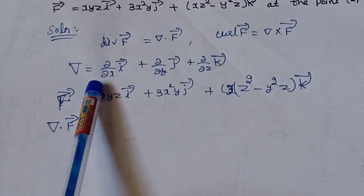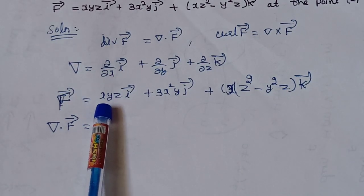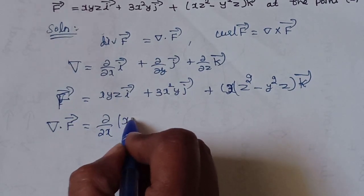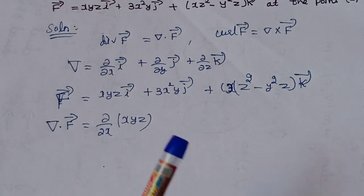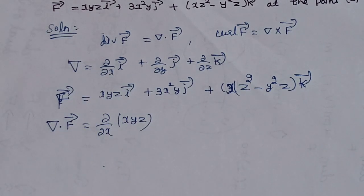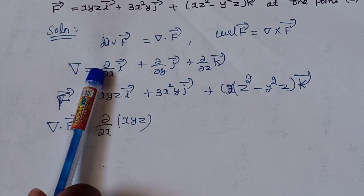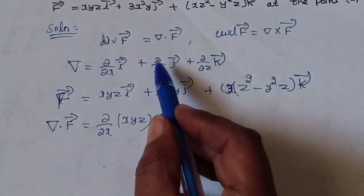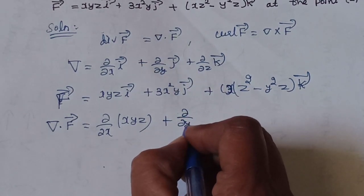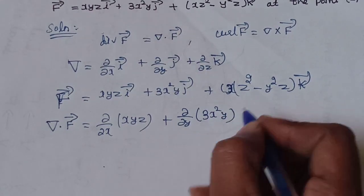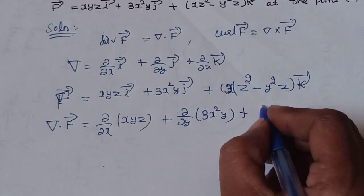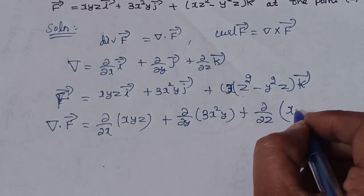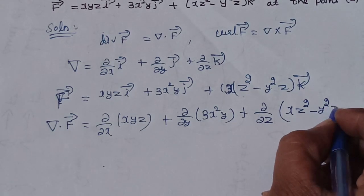Del dot F equal to d/dx, d/dy, d/dz — partial derivative with respect to x, y, z respectively. F is equal to xyz as the i-component, 3x²y as the j-component, and 2x²minus y²z as the k-component. So d/dz of the k-vector component is equal to 2x² minus y²z.